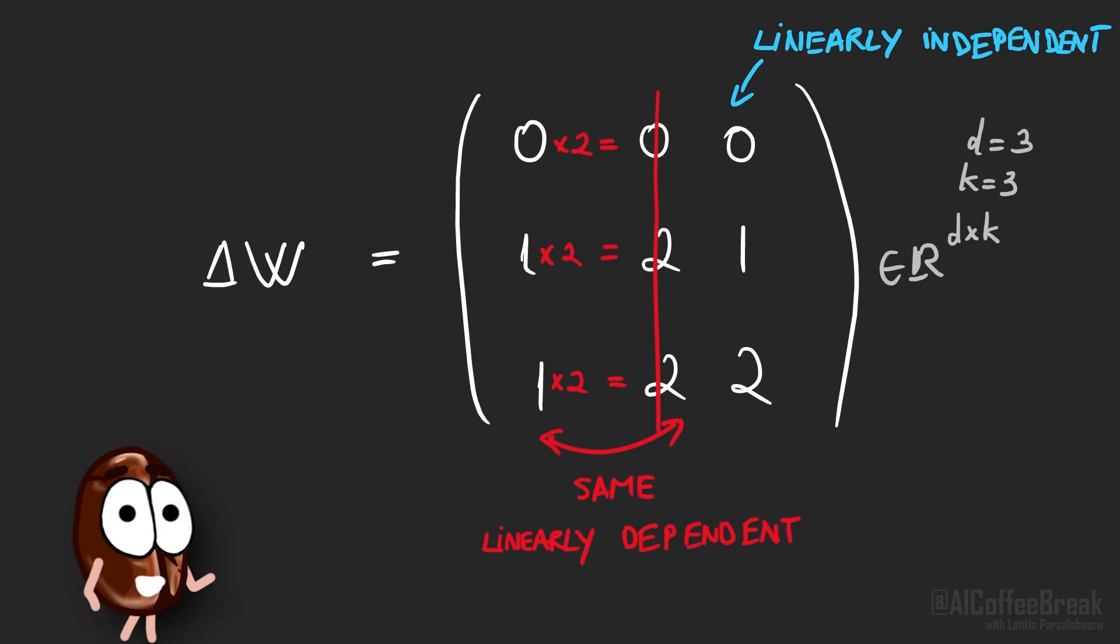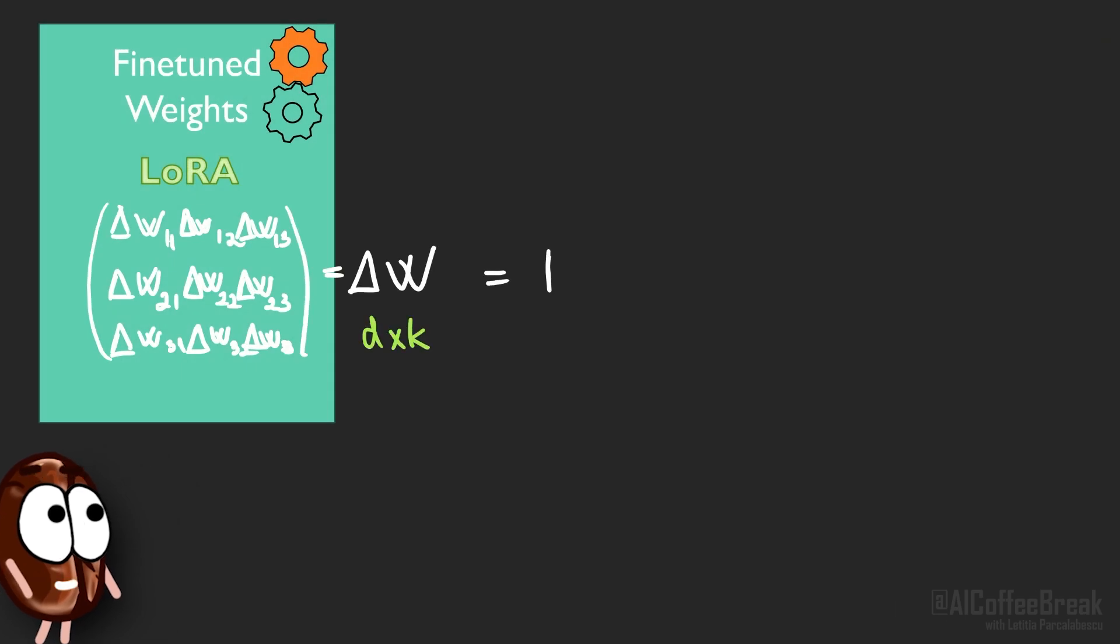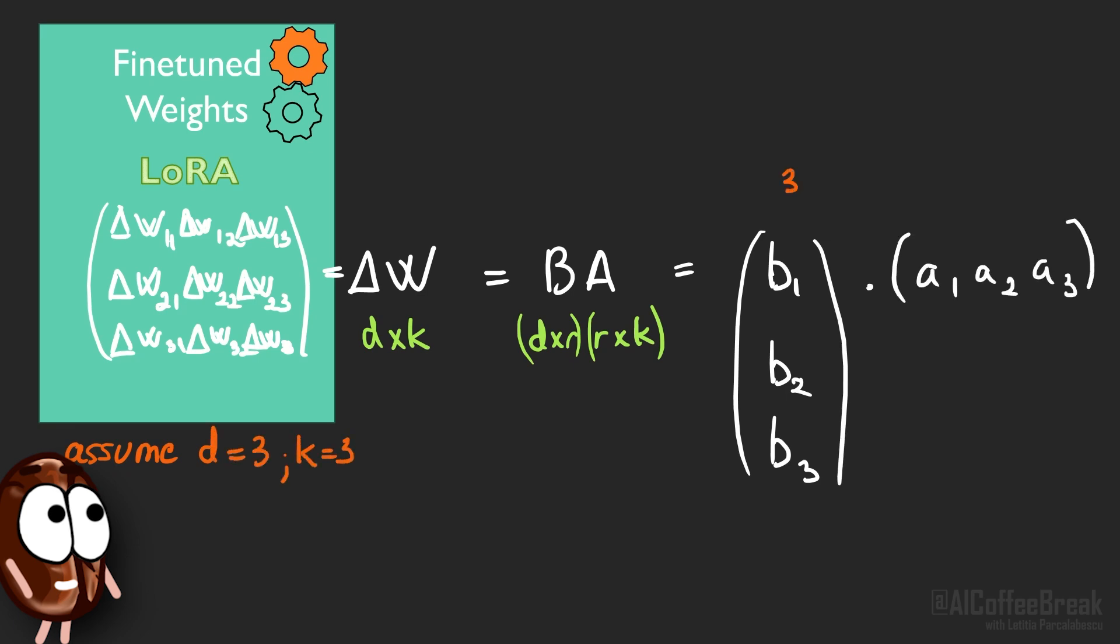Because that information was already there, since we can get that linearly dependent column from other columns in the matrix. So LoRa's idea is that we do not need to optimize the full rank matrices that have high dimensions, thus a lot of numbers, but rather we should do a low rank decomposition, by representing these weights as the multiplication of two matrices A and B.